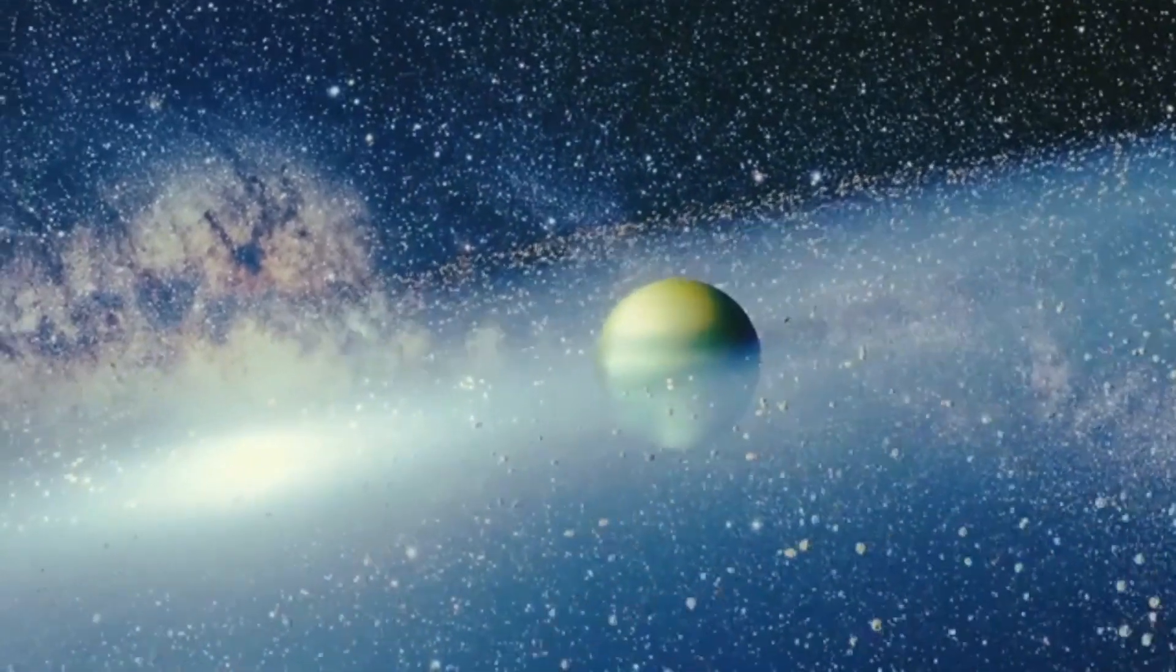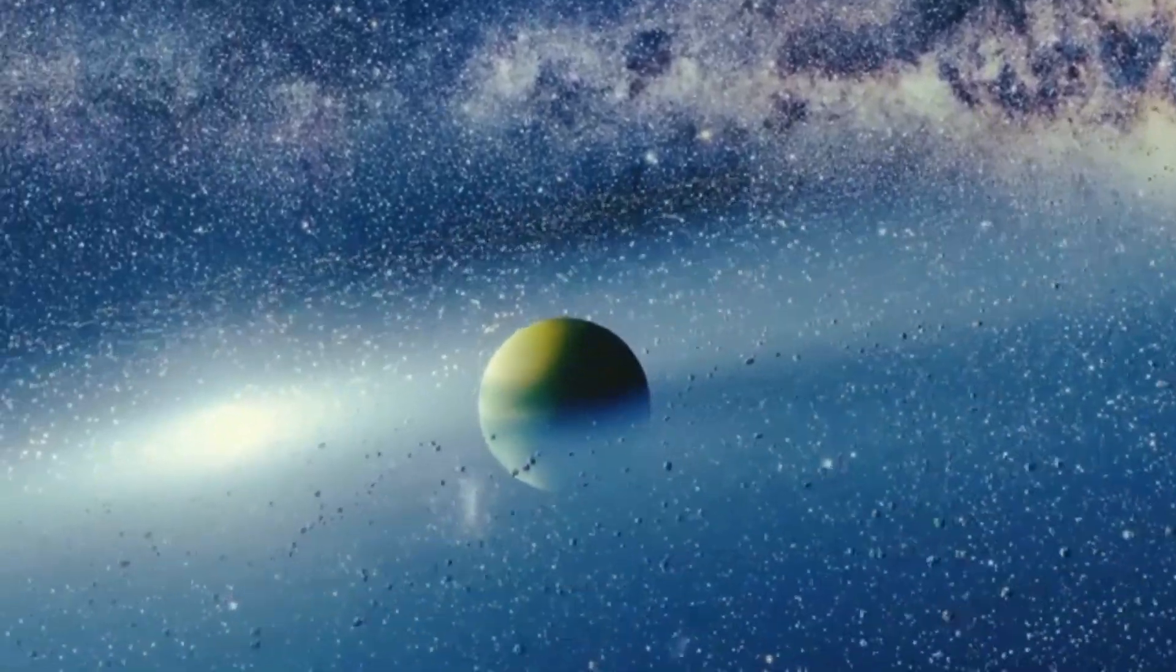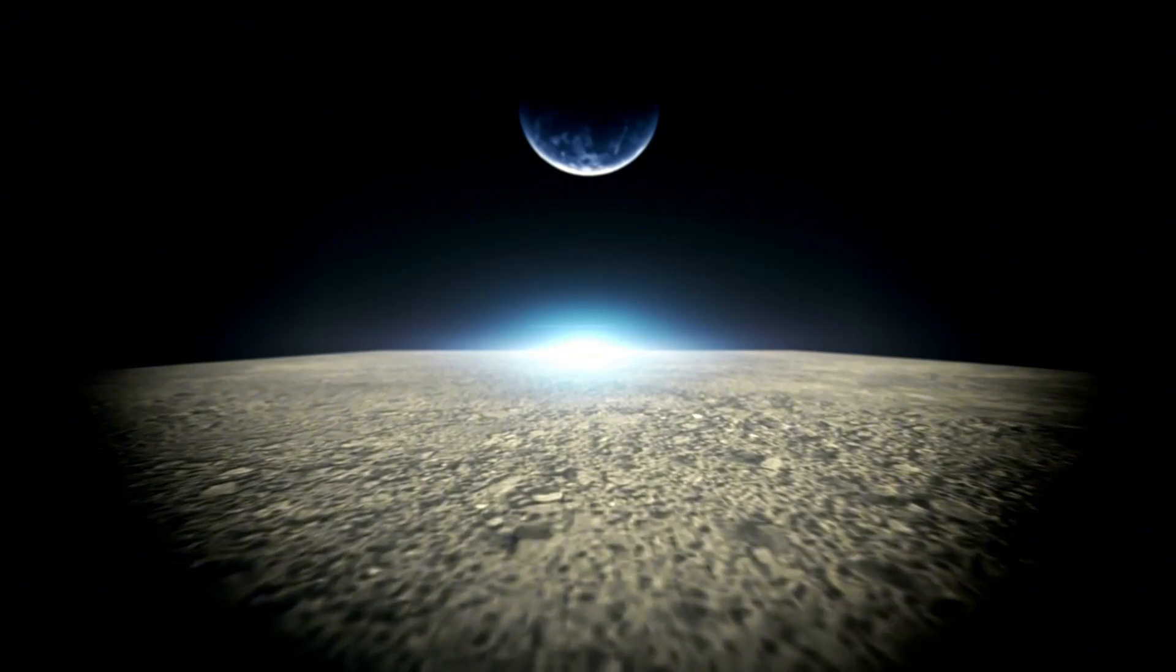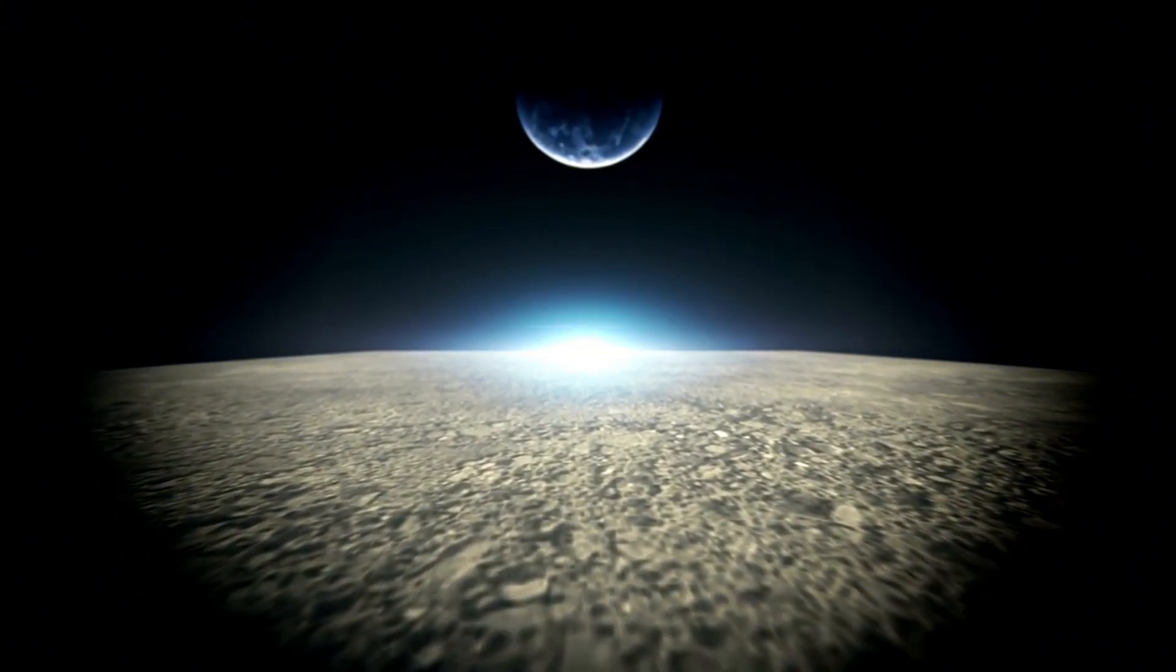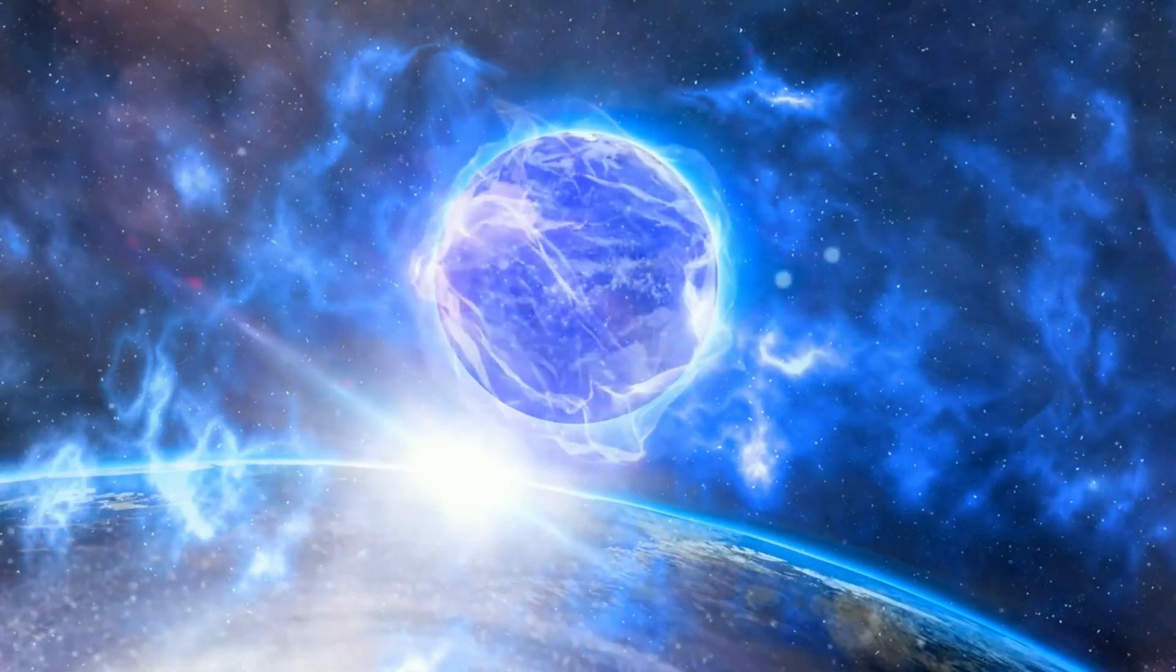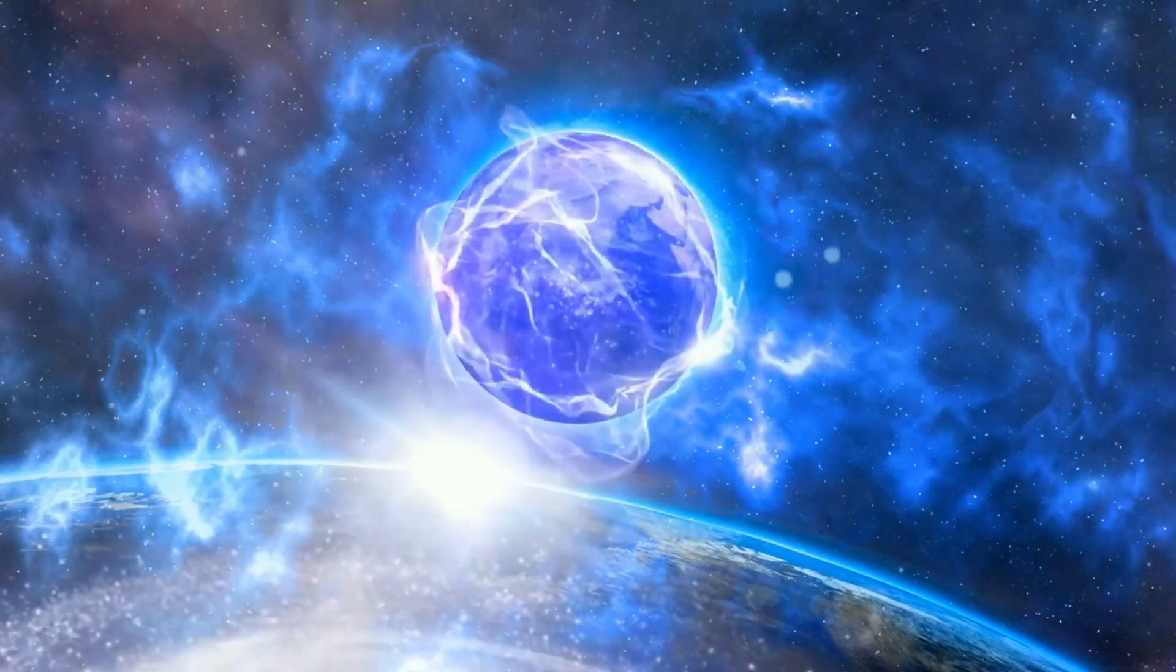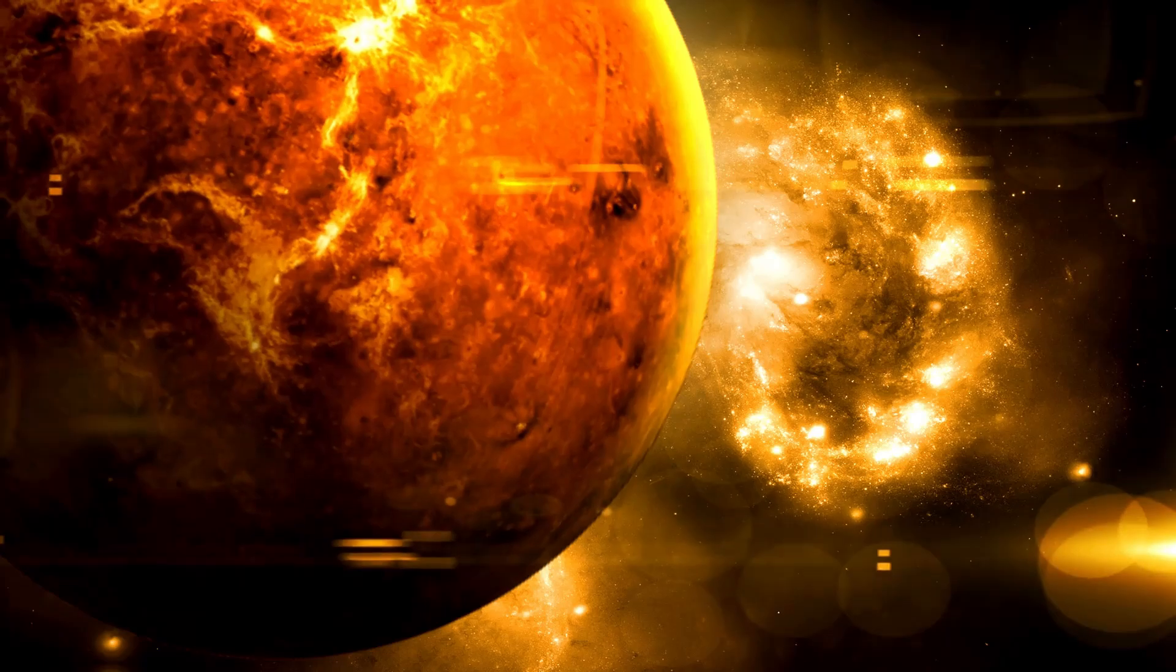In a noteworthy declaration that could change our situation in the universe, NASA has announced the discovery of the first extraterrestrial signs coming from the heading of Proxima b, the nearest known exoplanet to Earth, found simply four light-years away in the livable zone of its star, Proxima Centauri. This revelation has created an influx of fervor and interest overall. Could this be the moment when humankind finds that it isn't the only one in the universe?